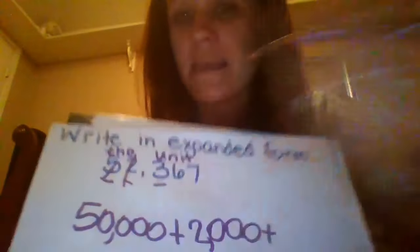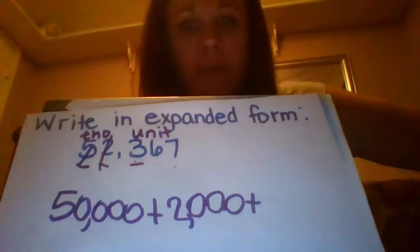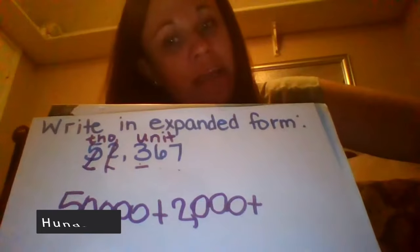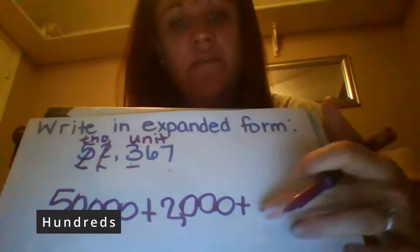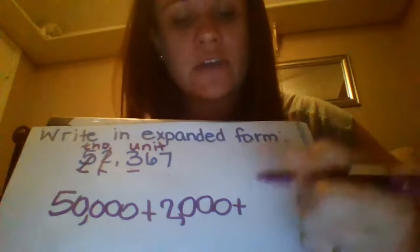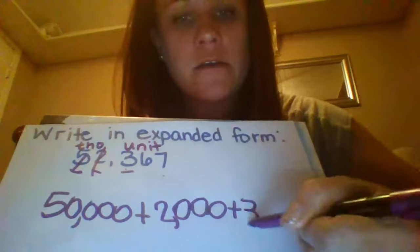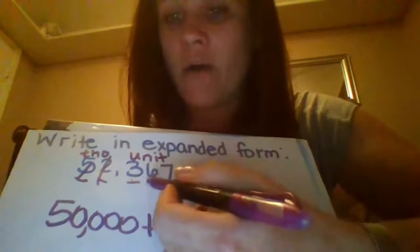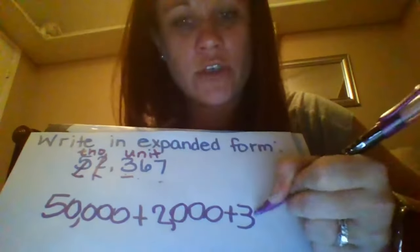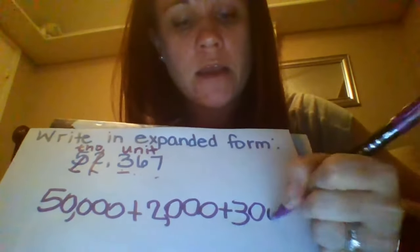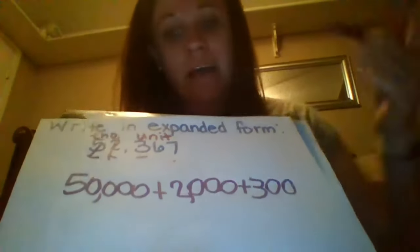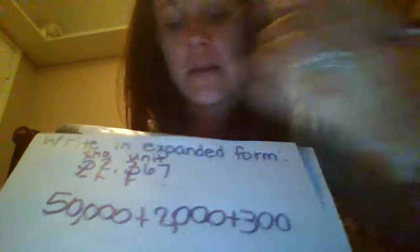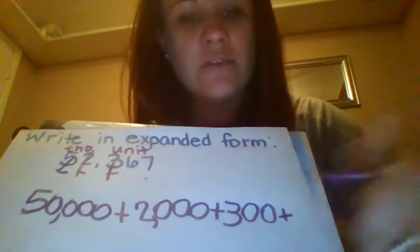My next number is the three, and that three is in the hundreds spot, so the value of that three is three hundred. I'll write my three and then count the zeros I need behind it — one, two — making three hundred. I'll mark it out so I don't accidentally write it again, and add another plus sign.